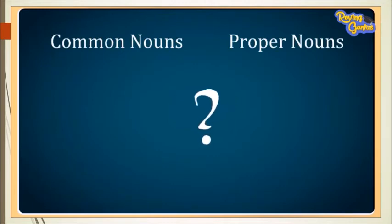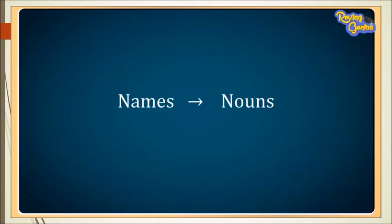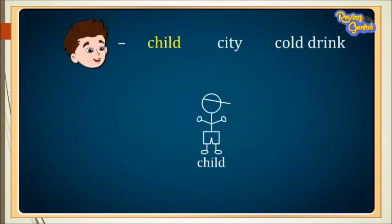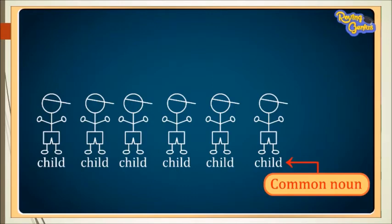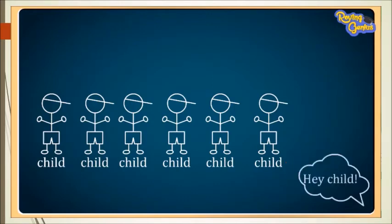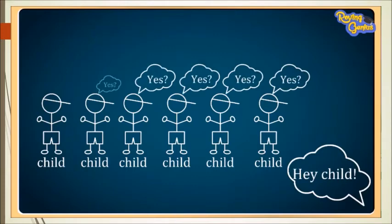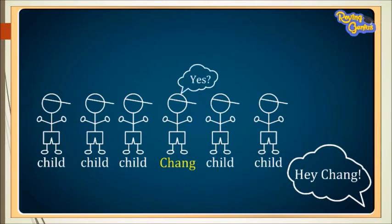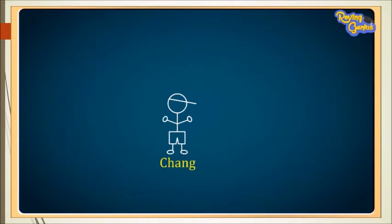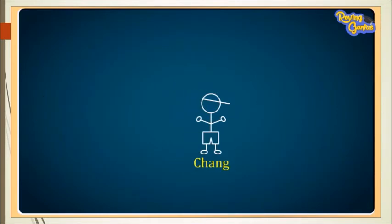What is the difference between common nouns and proper nouns? We know that all names are nouns. Here, 'child' is a general name — it is not specific. Hence, child is a common noun. If you say 'hey child,' you might probably get many responses. But if you say 'hey Chang,' you might get one response as you are pointing to someone specific. Chang is a special name given to a specific child and hence it is a proper noun.